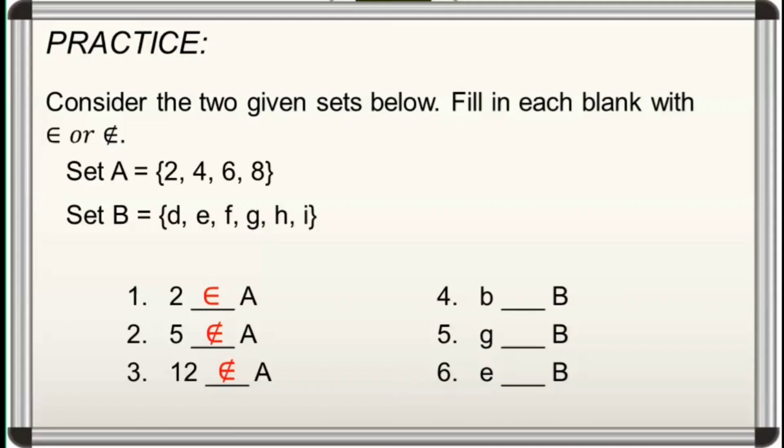Number 4, the letter B is not an element of set B. Number 5, the letter G is an element of set B.